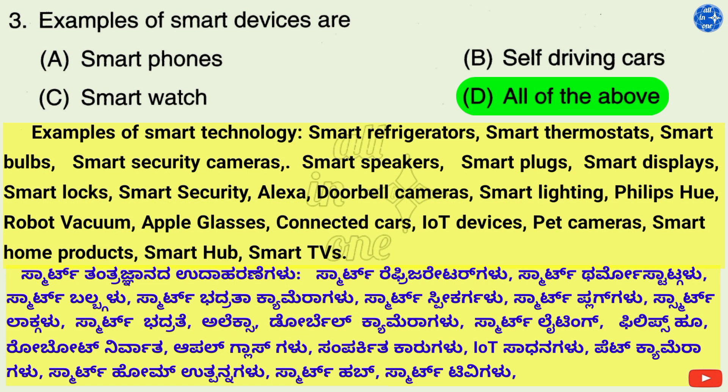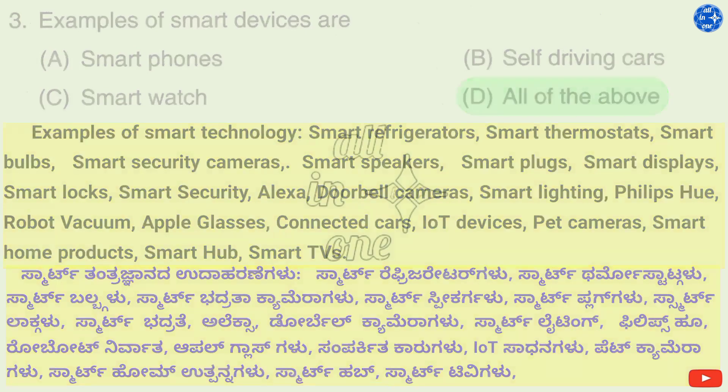Examples of smart technology include smart refrigerators, smart thermostats, smart bulbs, smart security cameras, smart speakers, smart plugs, smart displays, smart locks, doorbell cameras, smart lighting (Philips Hue), robot vacuum, Apple glasses, connected cars, IoT devices, pet cameras, smart home products, smart hub, and smart TVs.